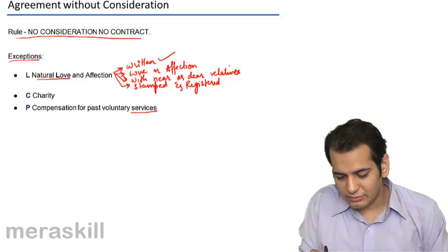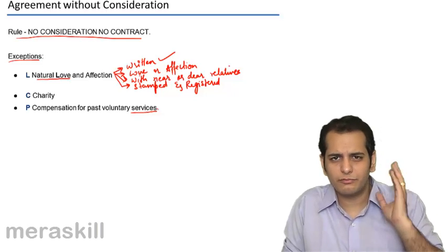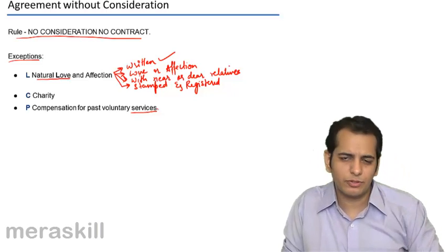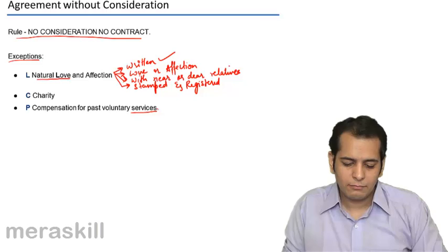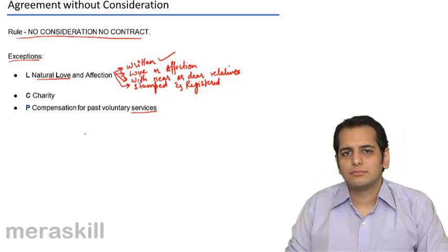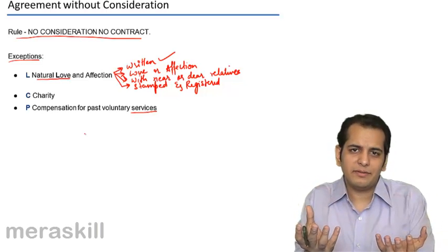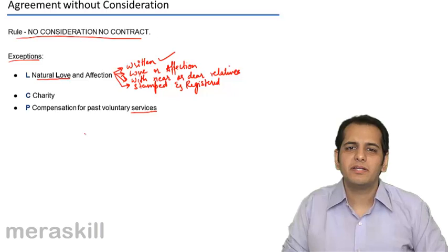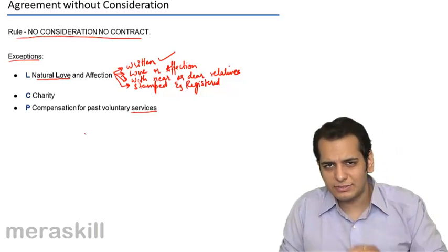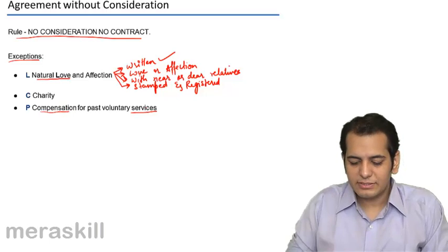Services means you have done something. You have served someone. You have done something for them. But compensation for it. Obviously, if you have done something for someone in business, you will get something in return. We call it compensation. So it is the compensation for services.